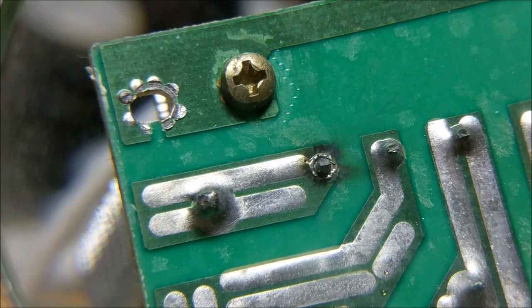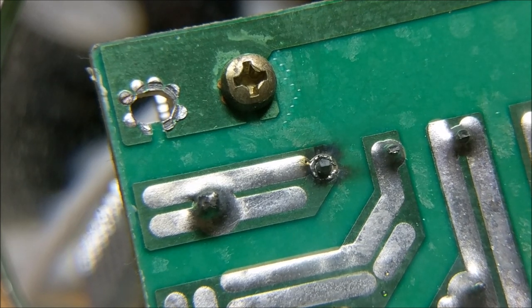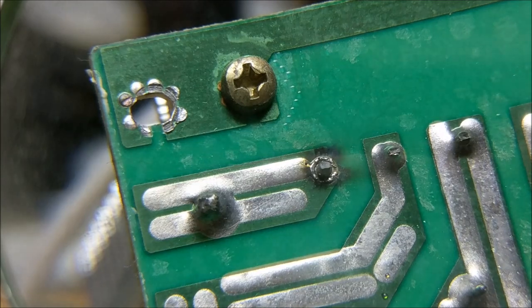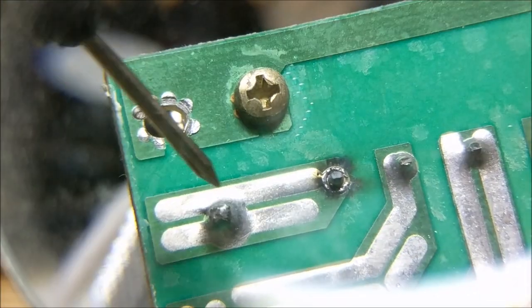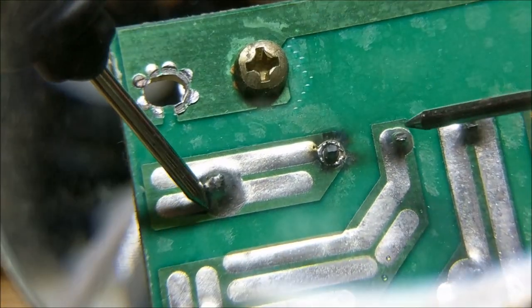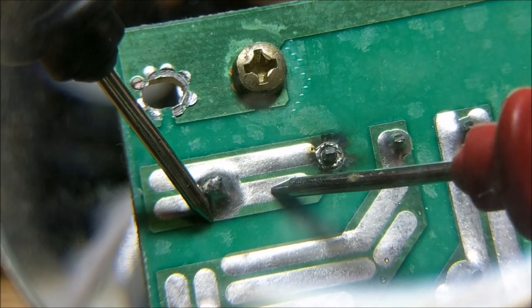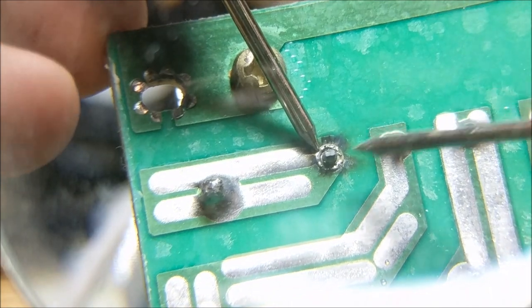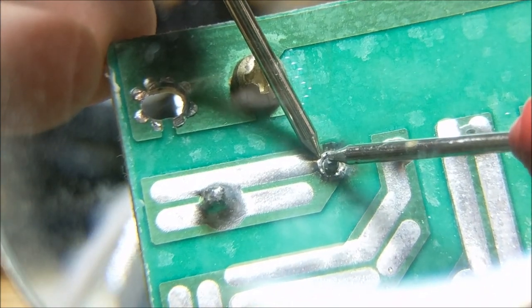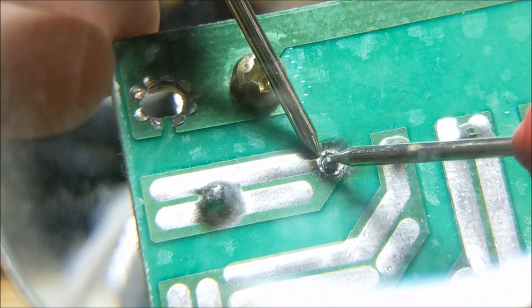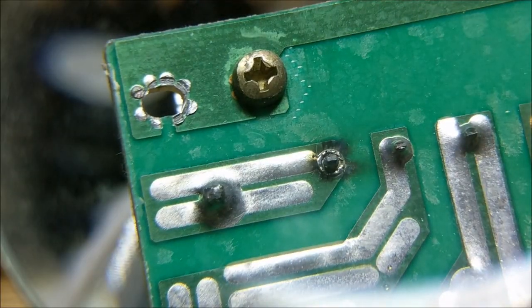when I set my multimeter to the continuity test and try to test the continuity of this device, I touch it to this end, I touch it to the top, nothing happens. When I touch it to here, something happens. Obviously, these two things are not connected because the solder joint has blown.